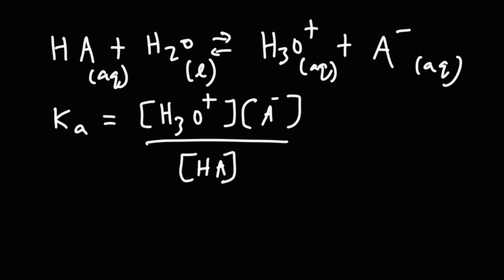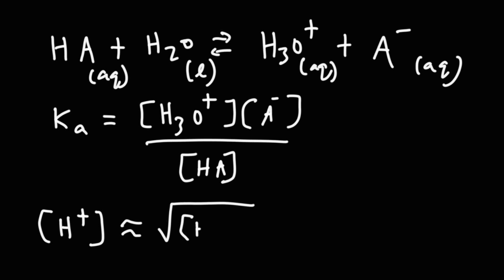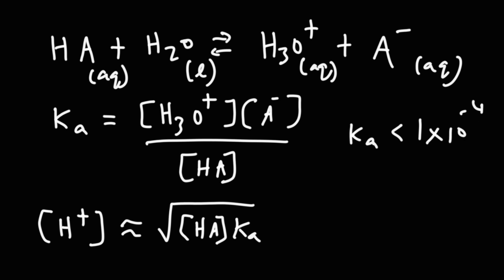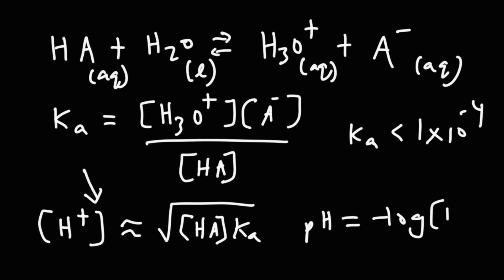If Ka is small — particularly 10⁻⁴ or less — you can simplify this equation. When that happens, the concentration of H+ is approximately equal to the square root of the concentration of HA times Ka. Remember, this approximation works when Ka is less than 1×10⁻⁴. Once you know the H+ concentration, you can calculate the pH using the standard formula.